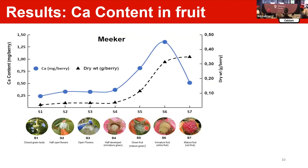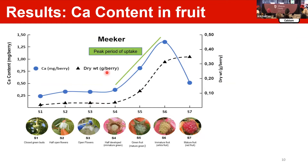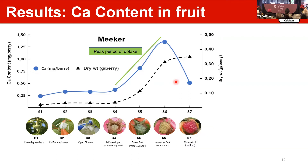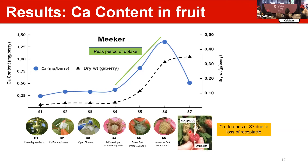Here are our results for Meeker. The blue line shows calcium content in milligrams per barrel, and the black line shows dry weight in milligrams per barrel. The peak uptake period is between S4 and S6. Between S6 and S7, calcium decreases because at S7 we collect only the drupelet — the receptacle stays on the plant — which is why calcium decreases in the fruit.